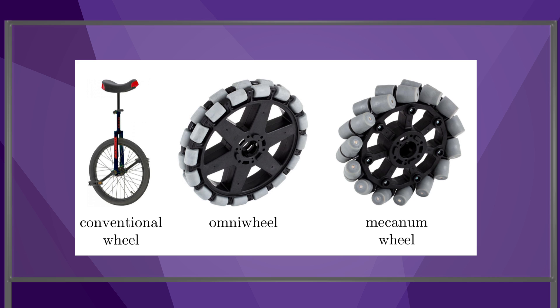While it's possible to build omnidirectional mobile robots using conventional wheels by appropriately steering each wheel, often omnidirectional mobile robots are built using unsteered Omni wheels or Mecanum wheels. I'll focus on robots using Omni wheels and Mecanum wheels in this video.